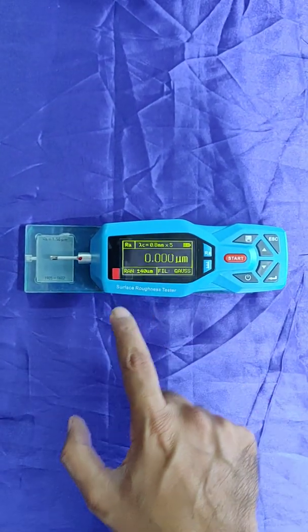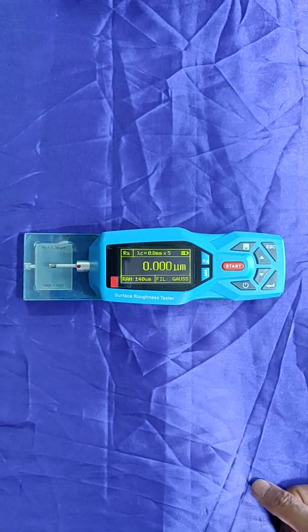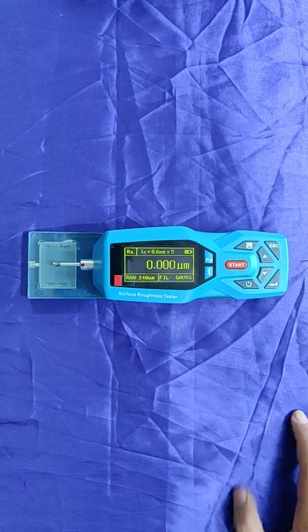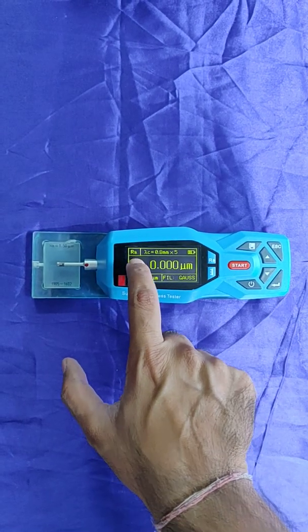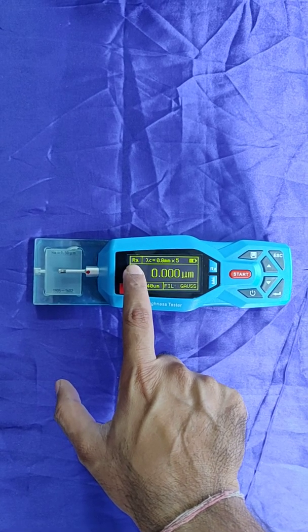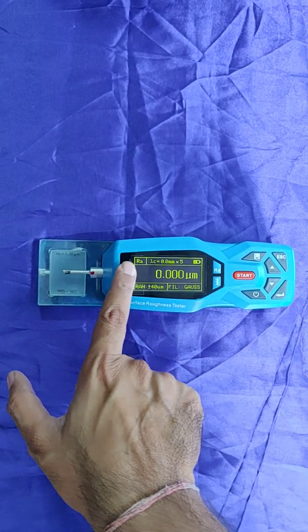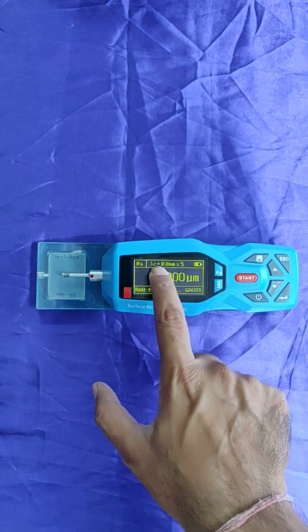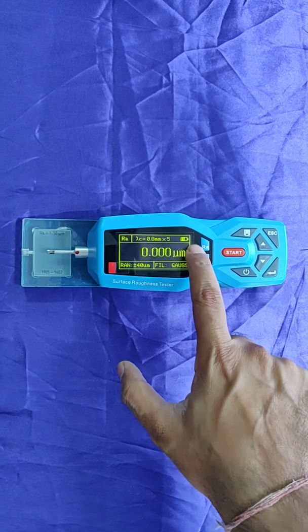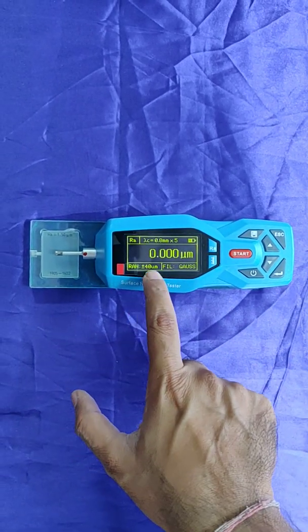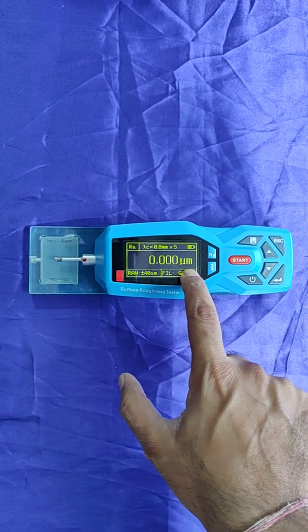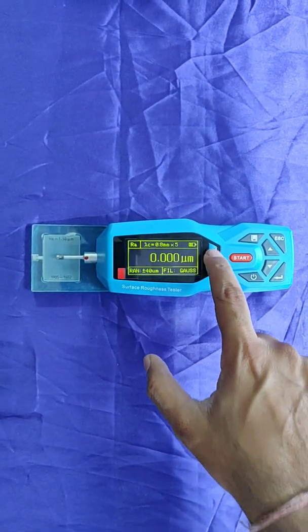The device is TR200 Plus. Now this is the main display. This is Ra. We have four values: Ra, Rz, Ry, Rt. The major value we require is Ra. The length of the measurement is 0.8 into 5 times. This is the battery, this is the range, and this is a filter, and this is the reading in microns.